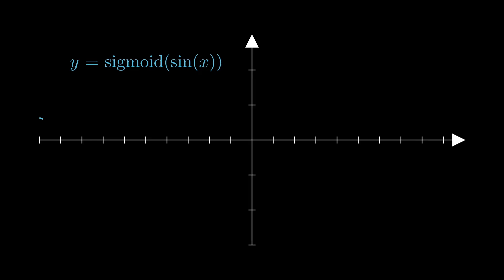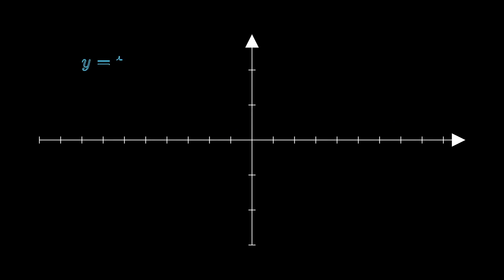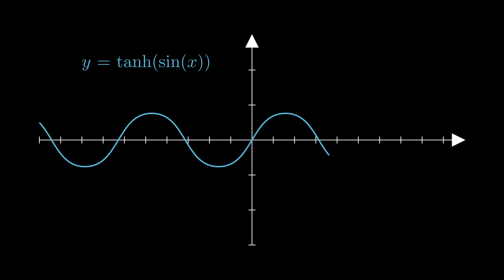Essentially, you are asking the network to do two things: one is to retain the input signal, and the second is to find out what needs to be added to the input image to transform it from a low- to high-resolution image.